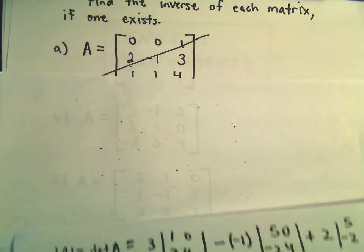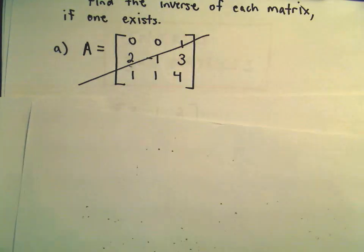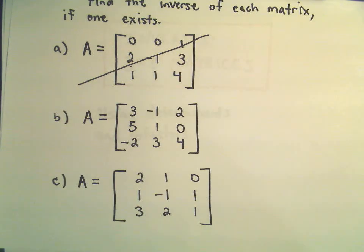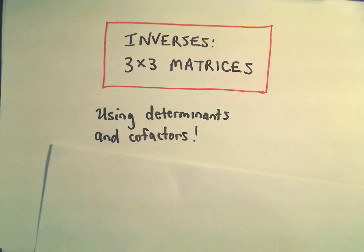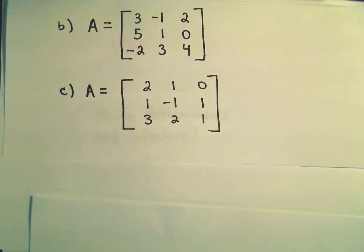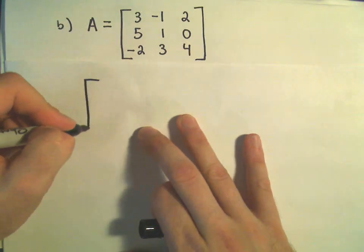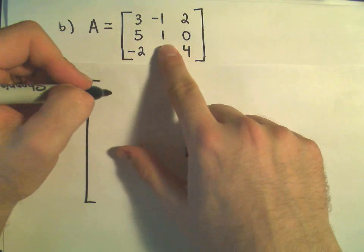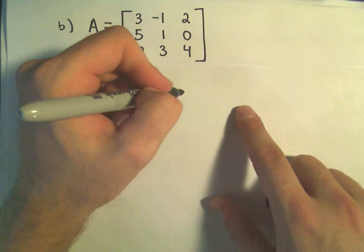We'll come back to that in a little bit. The next thing I'm going to do is use the cofactors — it's kind of a long process, but those are the breaks sometimes in mathematics. So I'm going to make this cofactor matrix. The first determinant uses 1, 0, 3, 4.